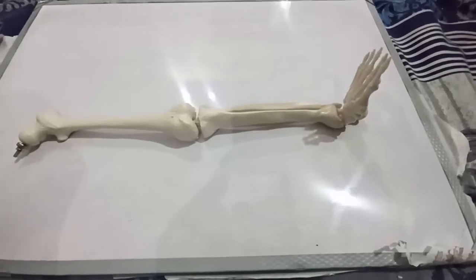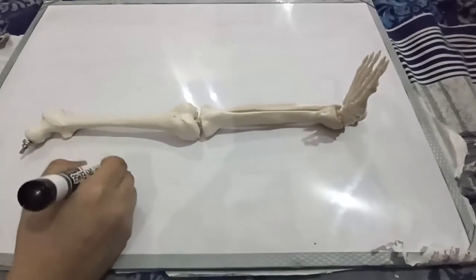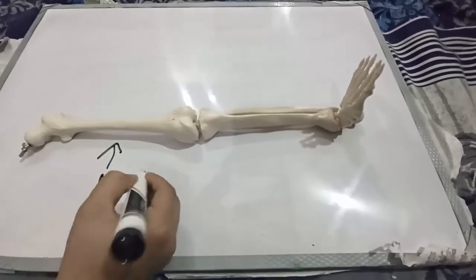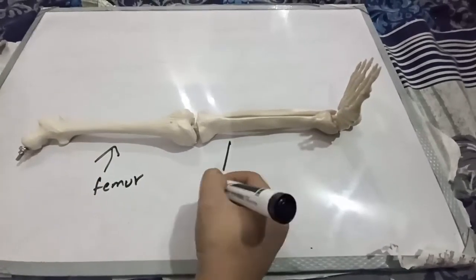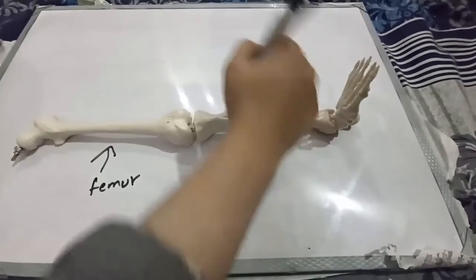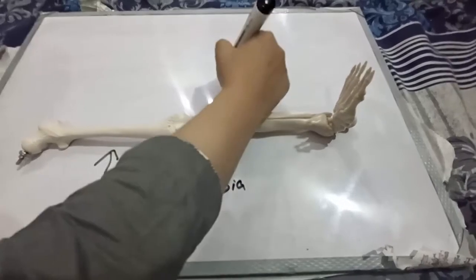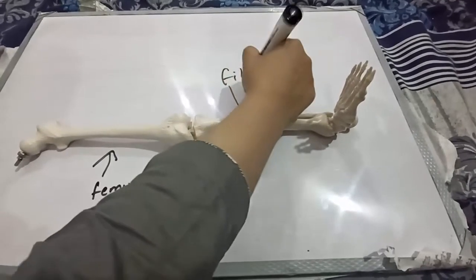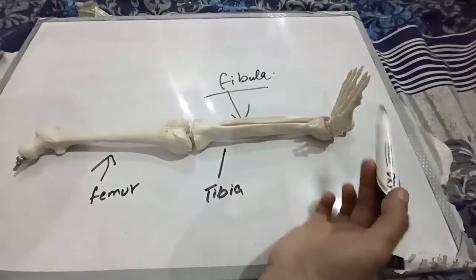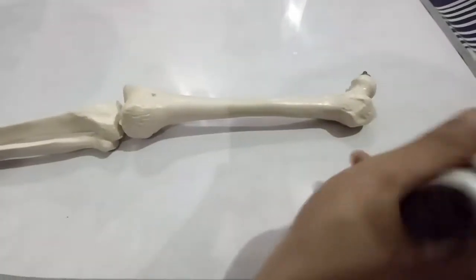In this video we will discuss the bones of the lower extremities. The first bone is called the femur, this is the tibia, this flat thin bone is the fibula, and this is the foot.